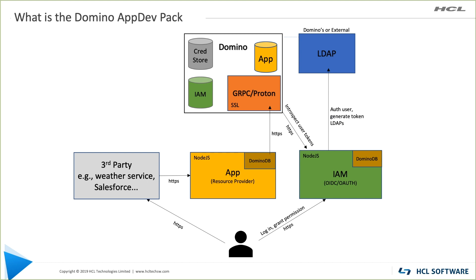The Domino App Dev Pack is an optional extension to the Domino server for opening up the server to support the gRPC protocol. It consists of three components: first, the server task called Proton; second, an npm module called domino-db; and third, a Node.js service called the IAM service, which provides OIDC and OAuth authentication flows for your application. A Node developer can include the domino-db module in their project to work with Domino just like any other database.